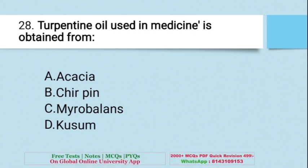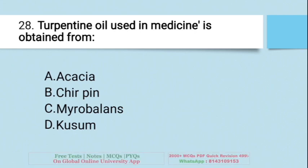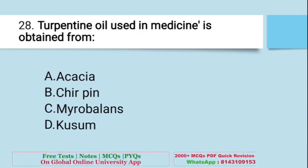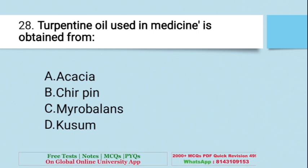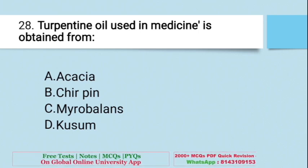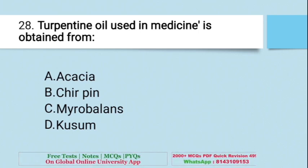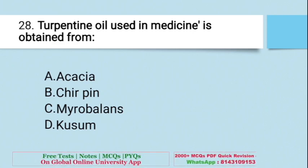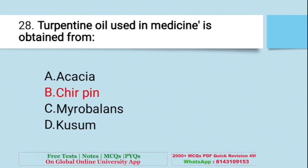Question: Turpentine oil used in medicine is obtained from — A. Acacia, B. Shirpine, C. Myrobalans, D. Kusum. The right answer is B — Shirpine.